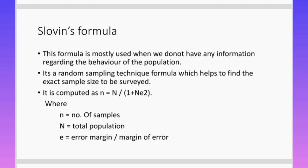The third formula, Slovin's formula, is a simple and often used formula. It is mostly used when we do not have any information regarding the behavior of the population — that is, if the population is unruly and we do not know its behavior. It is a random sampling technique formula and is computed as: small n equals capital N divided by 1 plus N into e-squared, where capital N is the total population, small n is the number of samples needed, and e is the error margin.